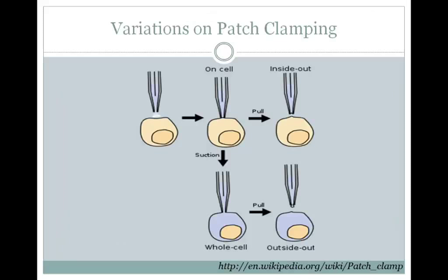There are a few variations on the patch clamping technique. The one we just talked about is the on-cell technique, where you've sucked up a small patch of membrane and can record the current going through one or a few ion channels. If you then pull up your pipette, you can break off just a small little patch of membrane. This is called an inside-out patch. The inside part of the cell is facing the outer or extracellular bath solution and the outside of the cell is facing the inside of your pipette tip.